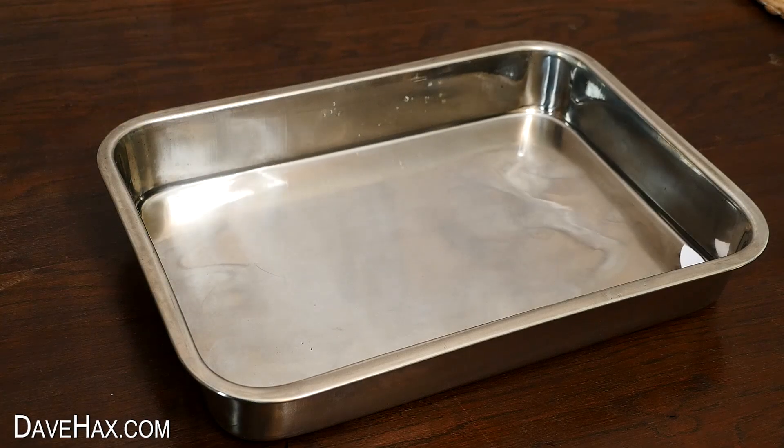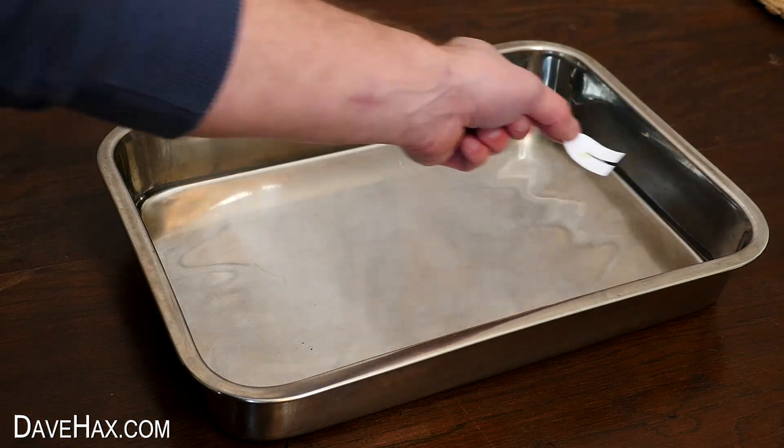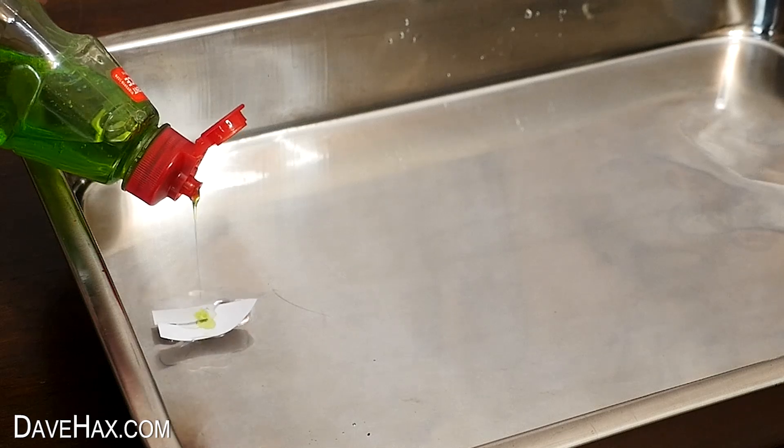Adding a drop of washing up liquid breaks down the water's surface tension and creates enough force to push the boat across the surface. Once the surface tension has been broken down, you can't do it again. So you need to replace the water.